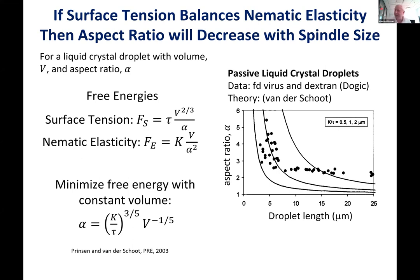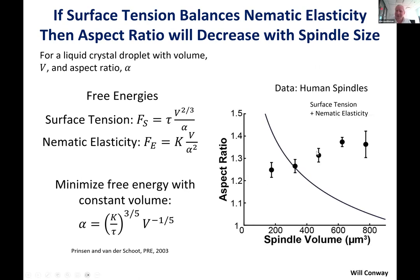What about actual spindles? In human tissue culture cells, spindles are often variable in size, and Will took advantage of that. He measured spindles of all different sizes in the same tissue culture cells and asked what the relationship is between aspect ratio and volume. The fit to the passive liquid crystal theory isn't so great — it gets only one data point — so that's probably not the right explanation for human spindles.